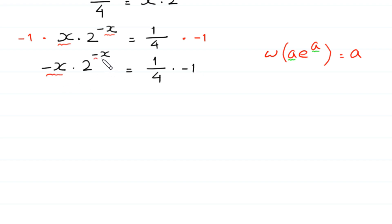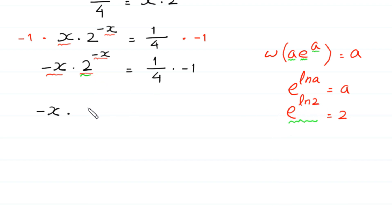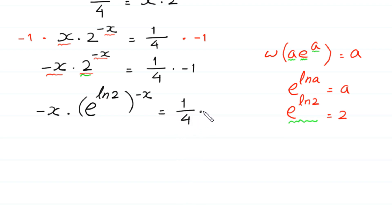Now we have the same expression — negative x here and negative x here. But to use the Lambert W function we must have e in place of this 2. To bring e in place of 2, we use the natural log property: e^(ln a) equals a. So e^(ln 2) equals 2. We replace this 2 with e^(ln 2), giving us negative x times e^(ln 2) to the power negative x equals negative 1 over 4.